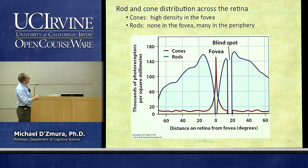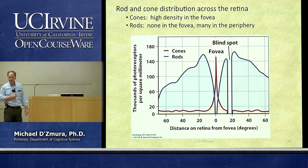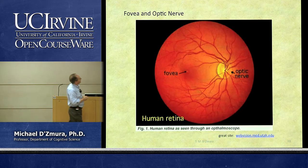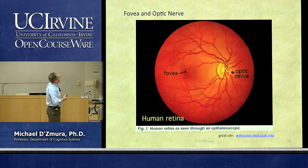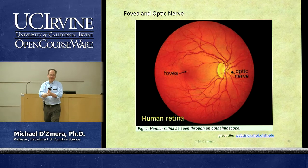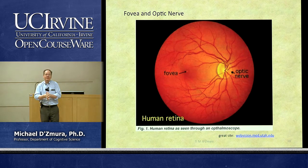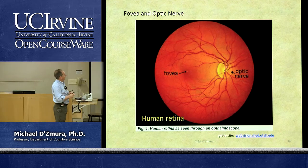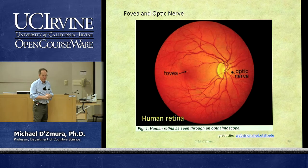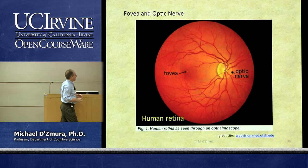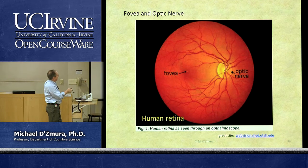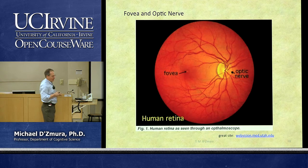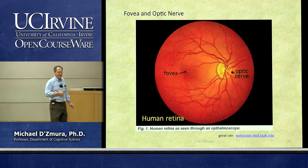The axons of the retinal ganglion cells travel up to the brain through the optic nerves — little cables at the back of each eye. The optic disc is where they exit the back of the eyeball. The optic nerve head is often used by ophthalmologists and optometrists to figure out a person's overall health.